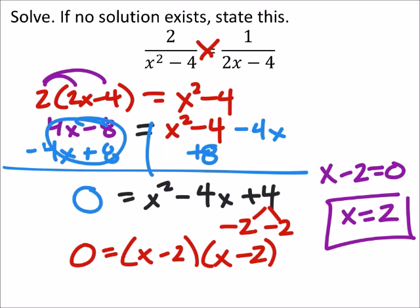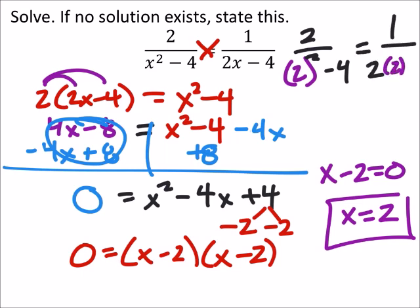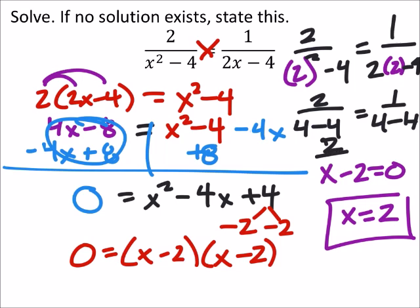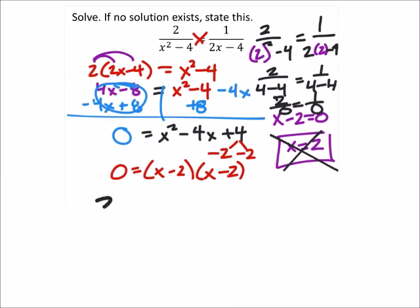But when we go back and check this, we have 2 over - now this is 2 squared minus 4 - equals 1 over 2 times 2, and that would also be minus 4. So this is 2 over 4 minus 4 equals 1 over 4 minus 4. That's 2 over 0 equals 1 over 0, which is true, it's just those are undefined values. So it looks like 2 is not a solution.